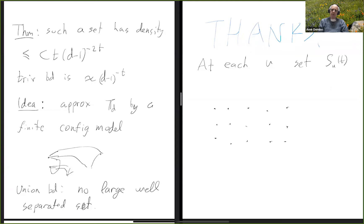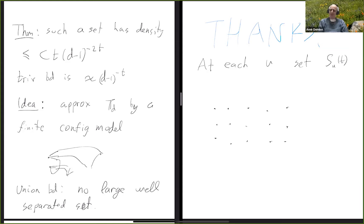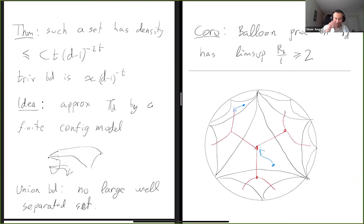Can you conjecture with confidence that it would always be transient in the non-amenable case? I believe so but wouldn't put it in writing — that would be my guess. There are open questions even in the hyperbolic space: can you prove the density bound for factor-of-iid sets in hyperbolic space directly, without going through the tree?